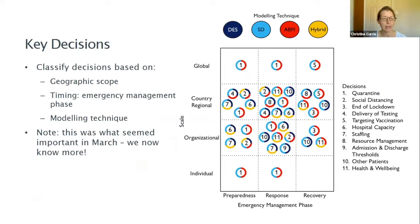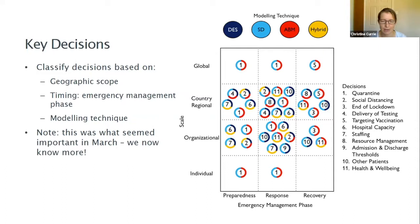Let's get to what we actually discussed in the paper. We started thinking about what the key decisions would be, and as soon as we did, we thought about how to classify them. One classification was geographic scope: is this a decision affecting the whole world, a country, a sub-national region like a US state or Wales and Scotland, an organization, or just individuals moving through things?